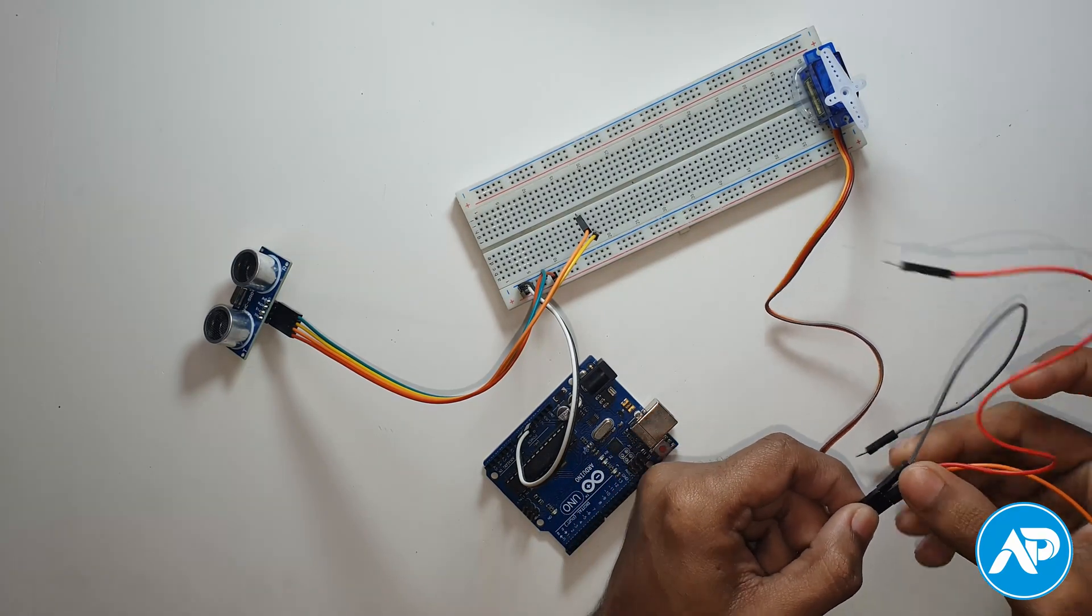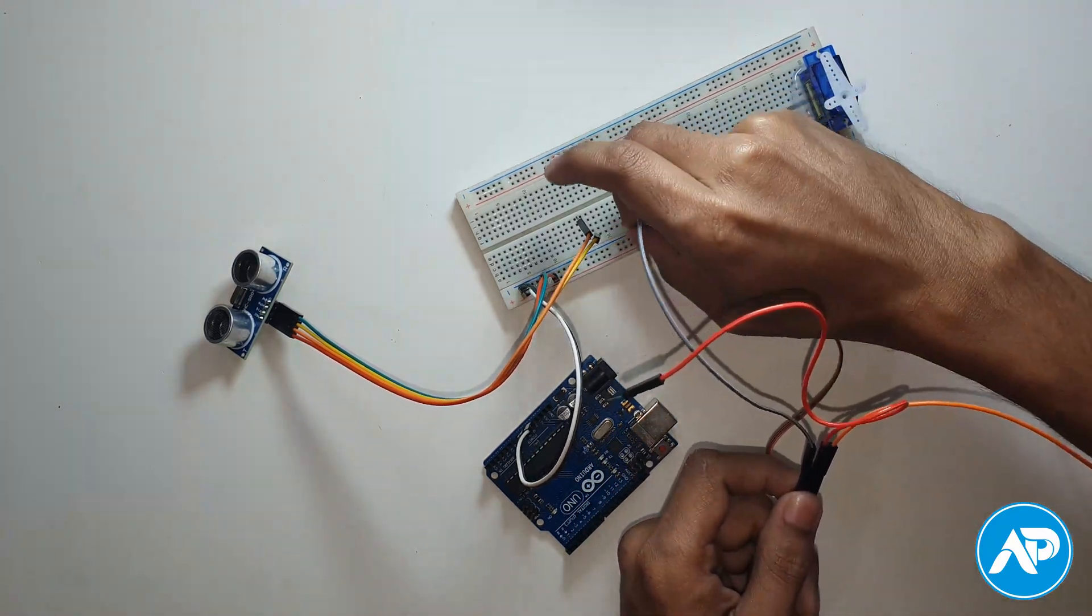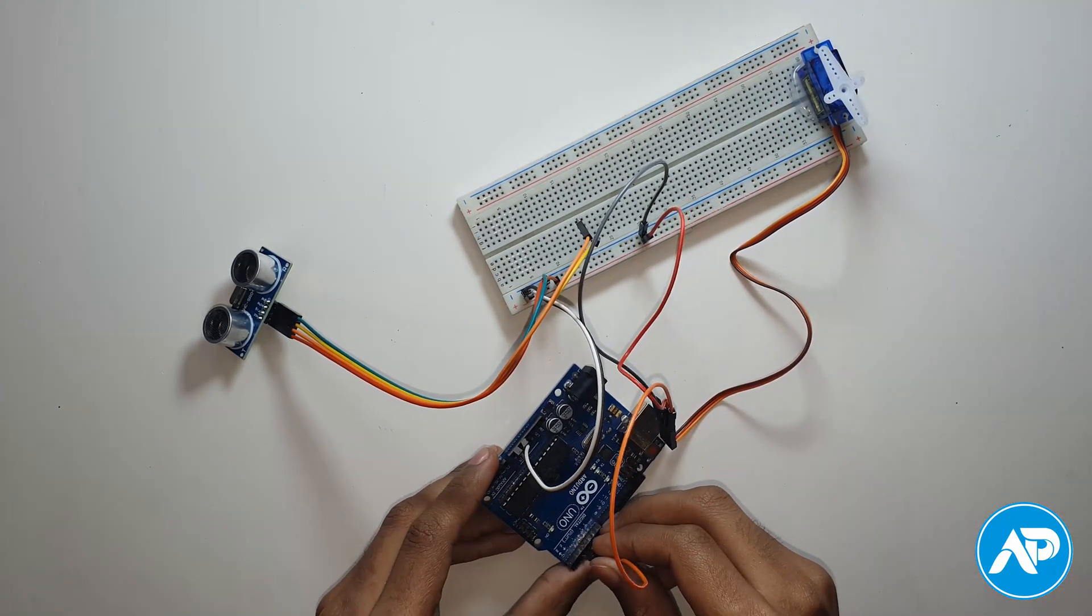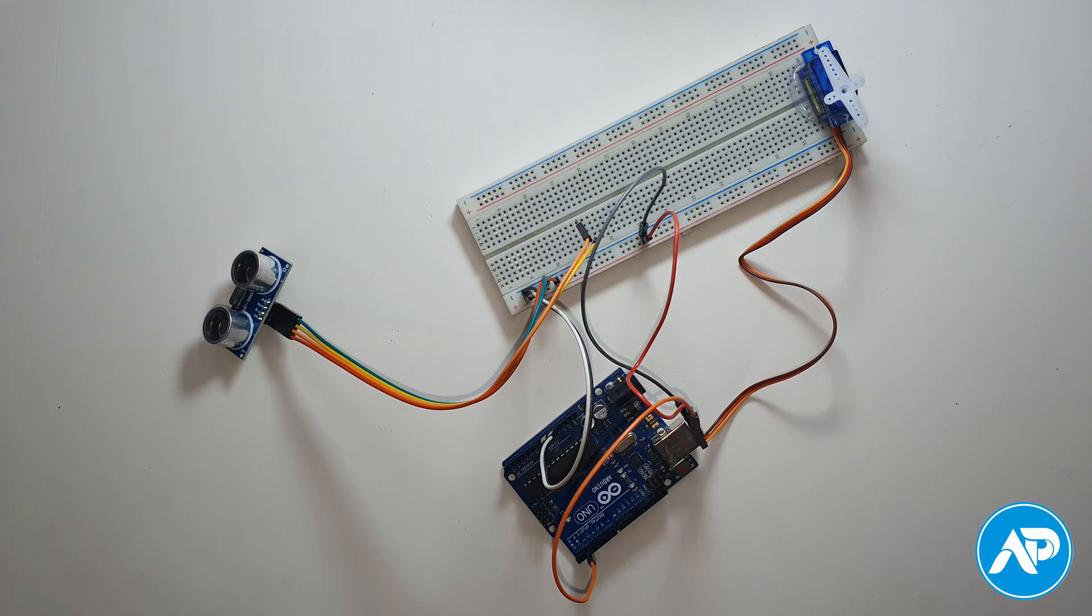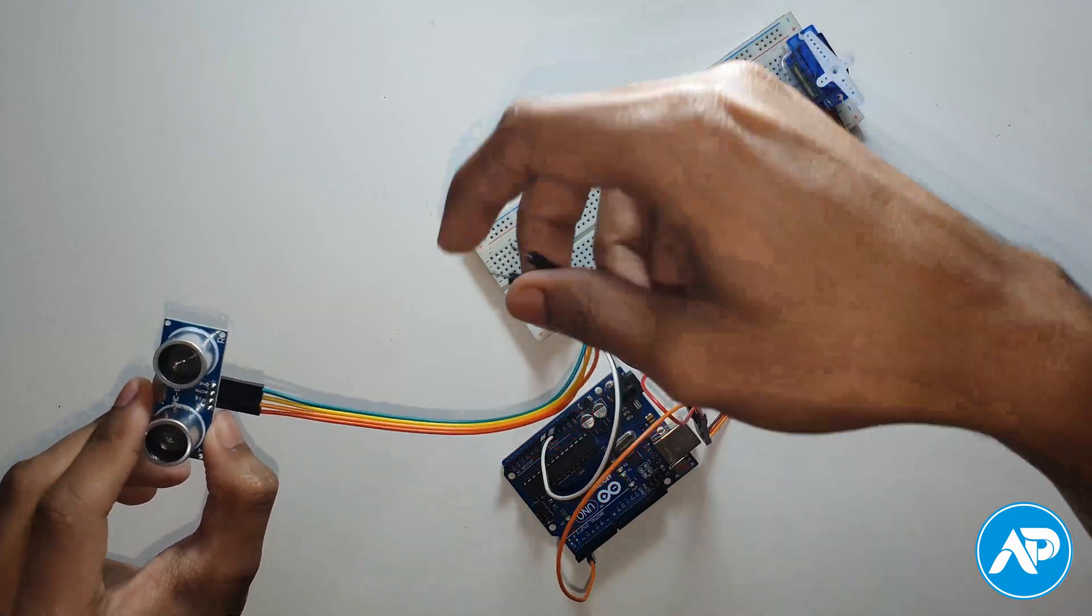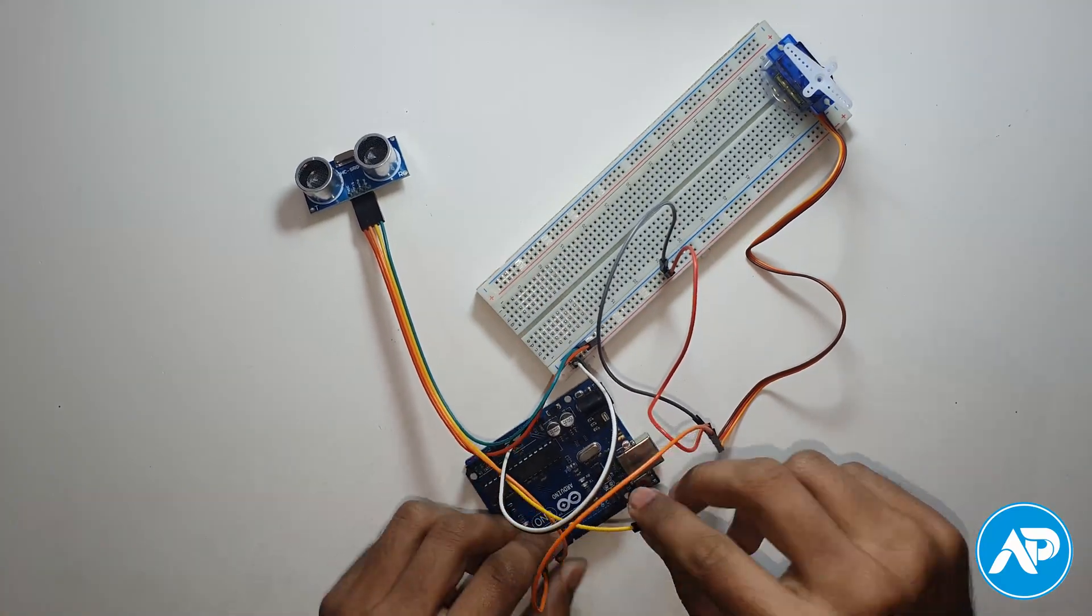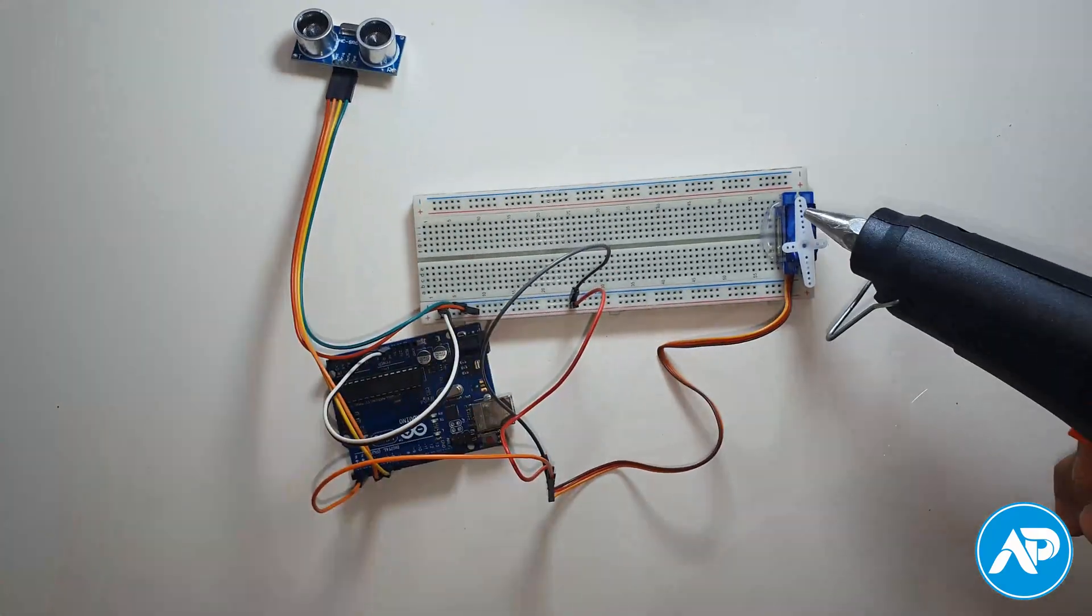Servo motor brown wire is ground, red wire is VCC, and orange wire is the signal wire. Here also, ground pin goes to minus and VCC goes to plus. Orange wire goes to pin 2. Then trigger pin goes to 5 and echo pin goes to 6 of the Arduino.